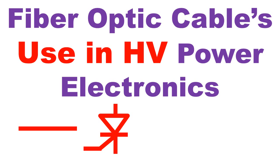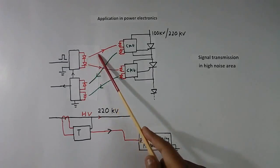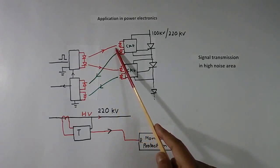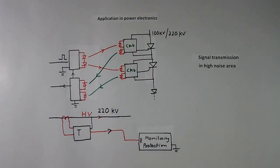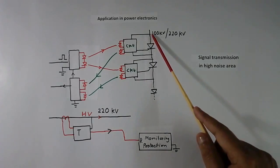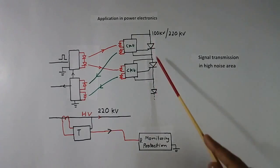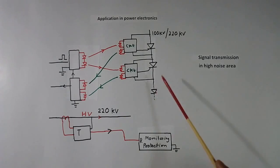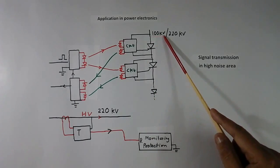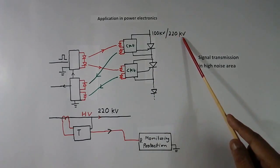Today I will explain the use of fiber optic cables in power electronics at high voltage. Here I have shown a few thyristors connected in series at high voltage — 100 KV or 220 KV.